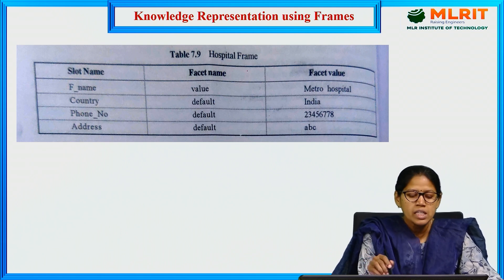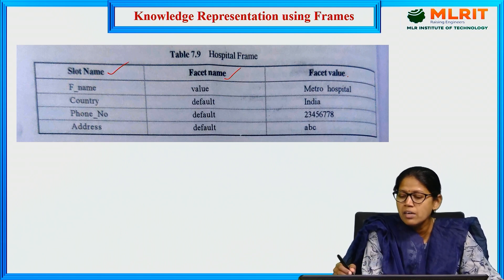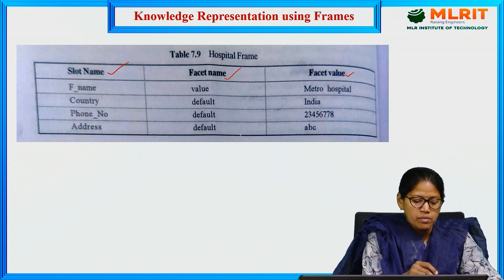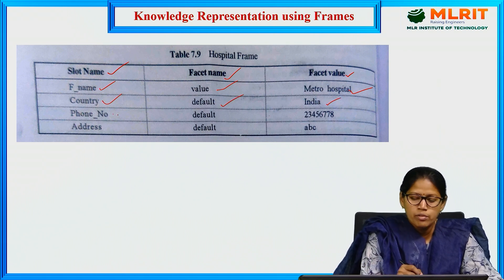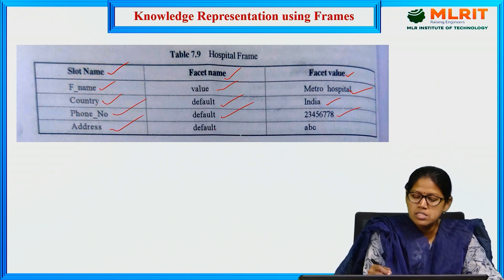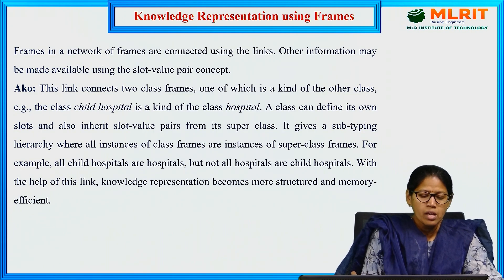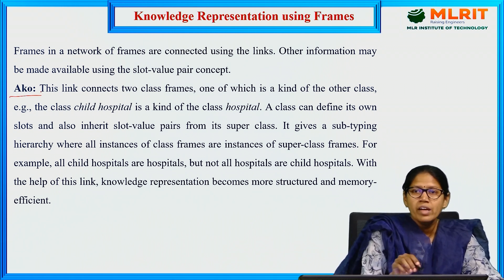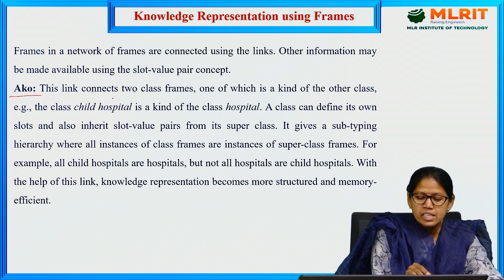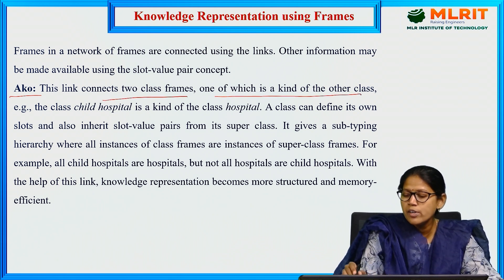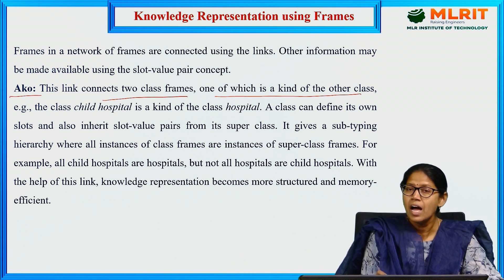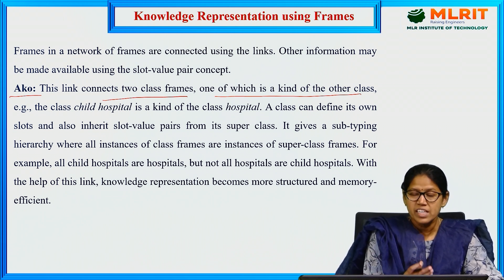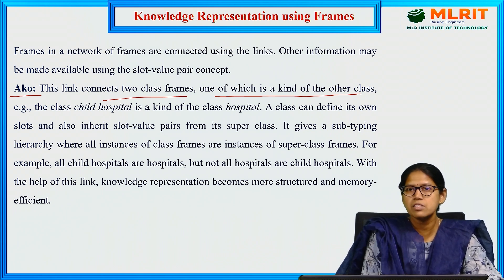Let us see the hospital frame. It has slot names, facet names, and facet values: frame name is Metro Hospital, country default is India, phone number default, address default is ABC. The term 'echo' means a kind of, or subclass — this link connects two class frames where one is a kind of the other. For example, hospital is the main root network, and child hospital, heart hospital, and ENT hospital are all echo — subclasses — to that hospital. A class can define its own slots and also inherit slot-value pairs from its superclass.